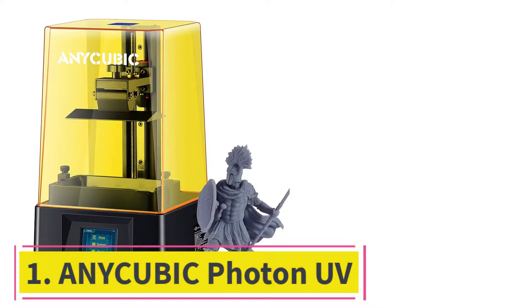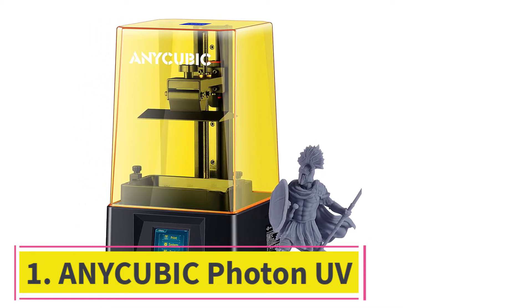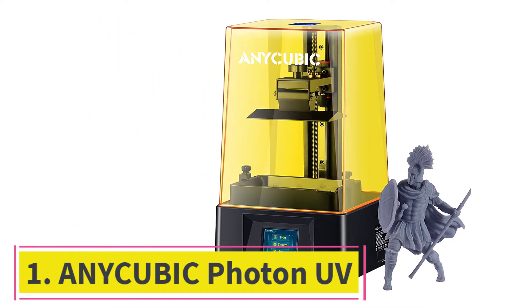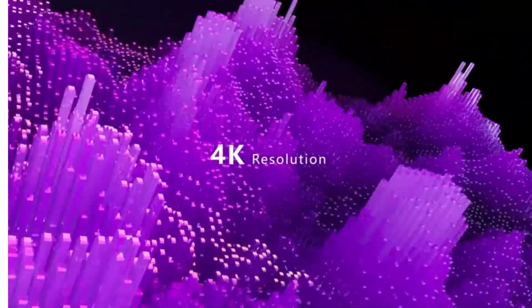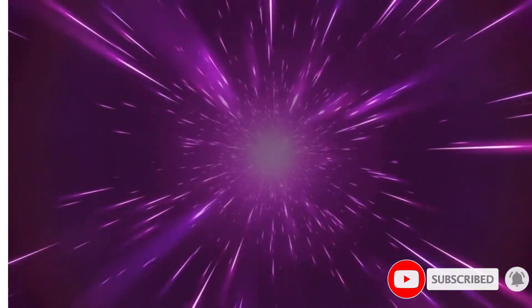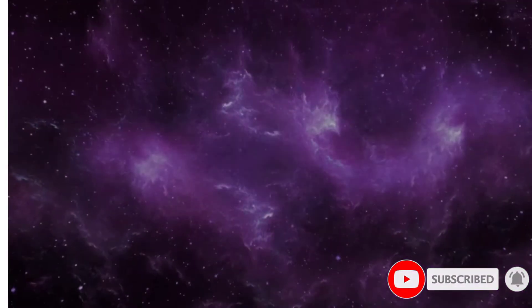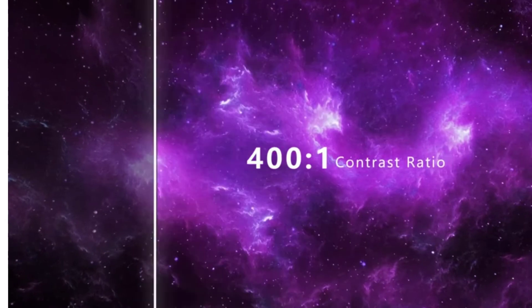Starting at number 1, Anycubic Photon UV. This 3D printer for miniatures has a first-class user interface that displays previews and print status. Due to the metal and CNC-based structure, you can enjoy many years of trouble-free operation. Anycubic Photon UV incorporates innovative in-house developed slicer software that allows you to get an excellent printing experience.